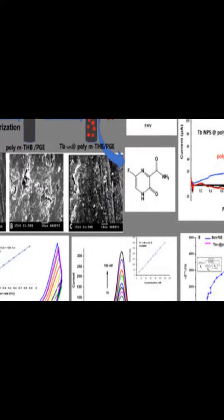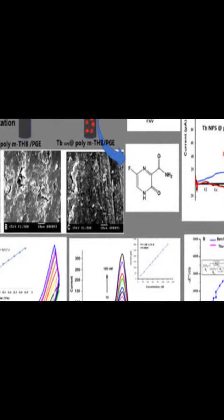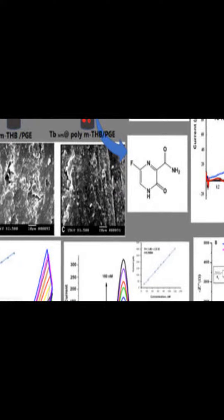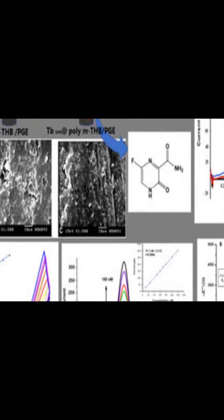This work focuses on the development of a polymer-based electrosensor by using thin-walled TB nanoparticles sandwiched between two polymer layers, i.e., TBNPs at polyMTHB slash PGE.